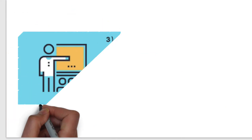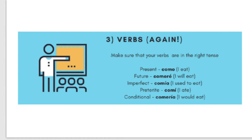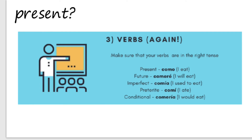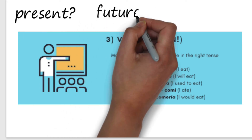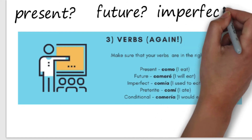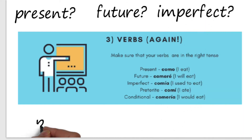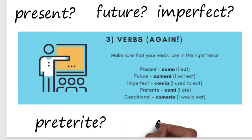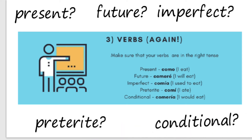Point number three: verbs again. Make sure your verbs are in the right tense. Are they in the present — como; the future — comeré; the imperfect — comía; the preterite — comí; or the conditional — comería? These are really important, and to get the high grades you've got to be able to use these with accuracy.